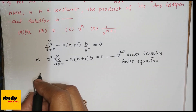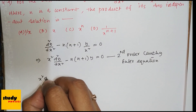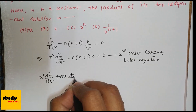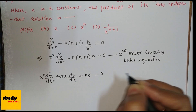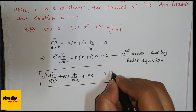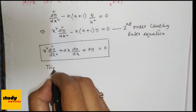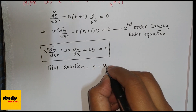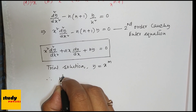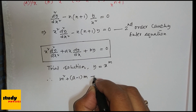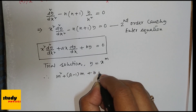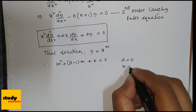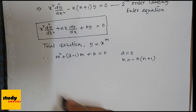The general form of a Cauchy-Euler equation is: x² d²y/dx² + ax dy/dx + by = 0, and the trial solution is y = x^m, which yields the characteristic equation m² + (a−1)m + b = 0. Here, a = 0 and b = −n(n+1).